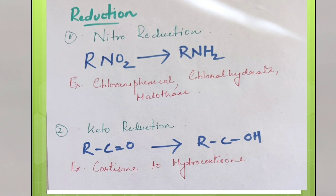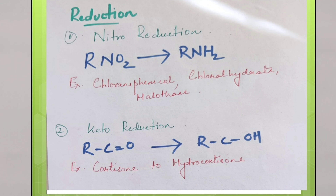Reduction reactions are of two types: nitro reduction and keto reduction. In nitro reduction, the nitro group is converted into amino group. Examples of drugs which undergo nitro reduction are chloramphenicol, chloral hydrate and halothane. In keto reduction, keto group is converted into hydroxyl group. For example, cortisone gets converted to hydrocortisone.